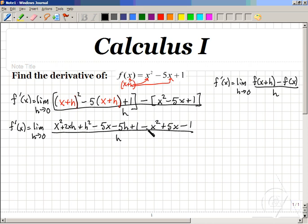Note that negative x squared cancels with positive x squared. Positive 5x cancels with negative 5x. And minus 1 cancels with positive 1.